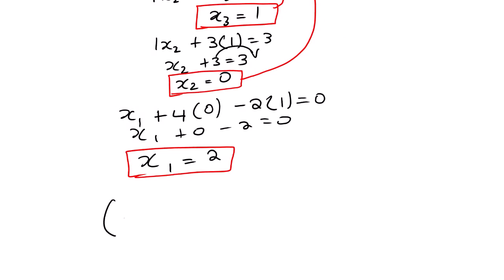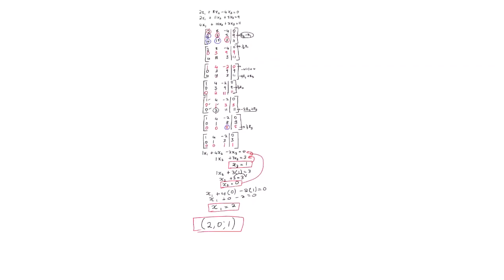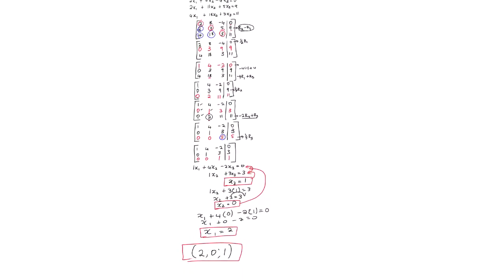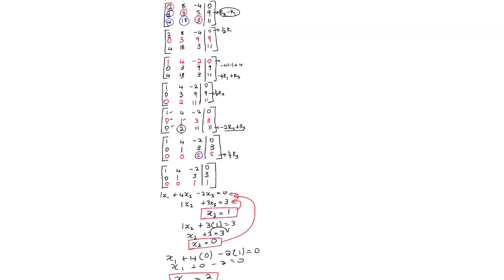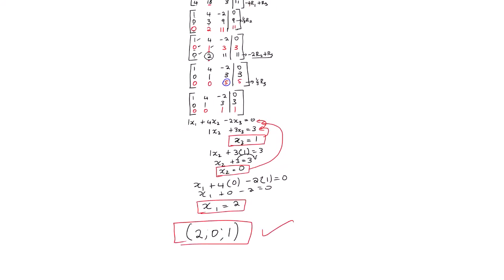The solution for this system of linear equations is X1 = 2, X2 = 0, X3 = 1. We are done with Gaussian elimination method and have obtained our solution. That's it for this lesson video. This is Fahula SJ, thank you very much.